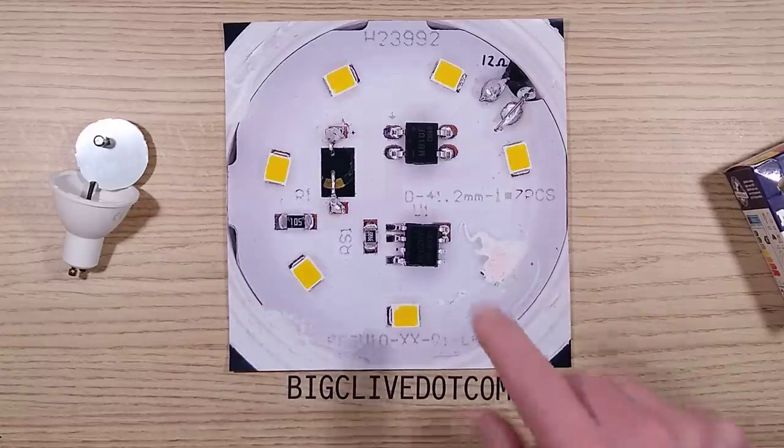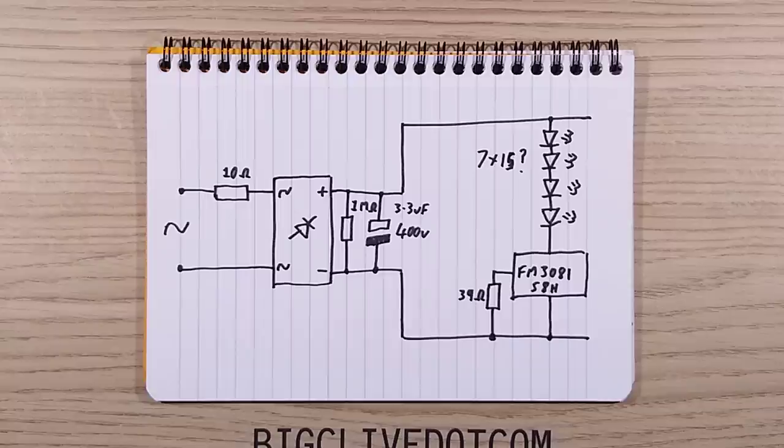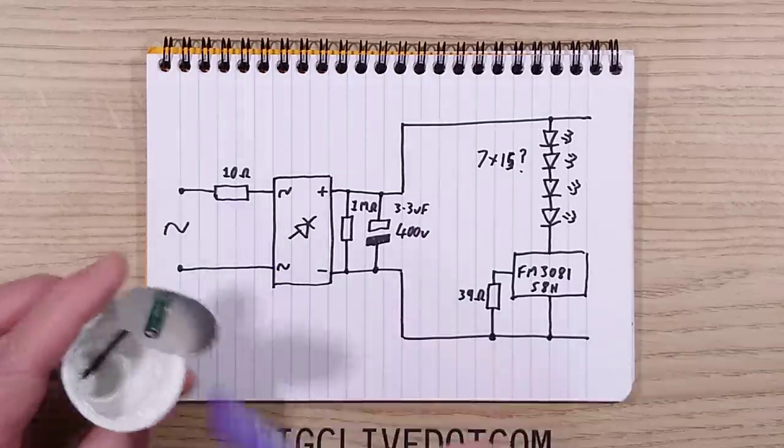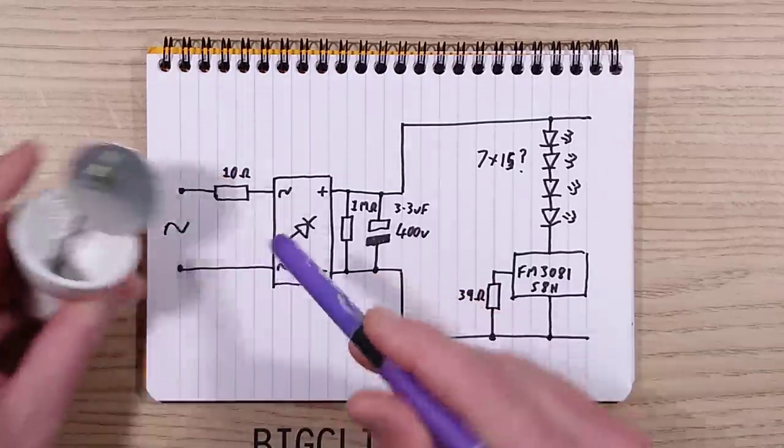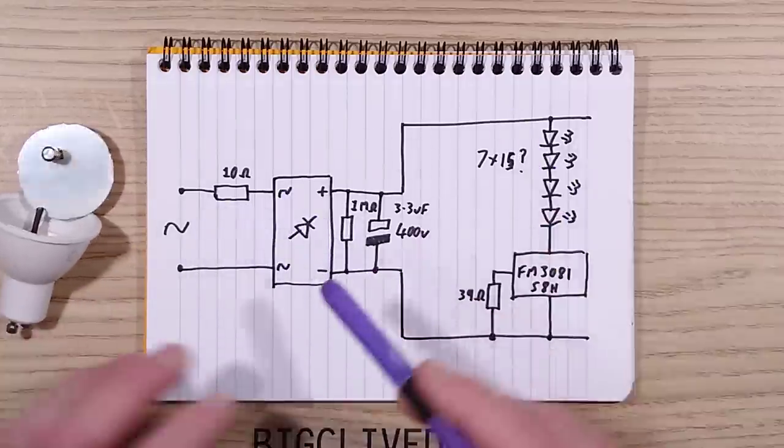But let's reverse engineer this LED lamp anyway. And there are no great surprises. There's a 10 ohm fusible resistor tucked in down here in the base. That limits inrush current, but it also acts like a fuse if something goes wrong, like for instance if the wires touch the aluminum circuit board.